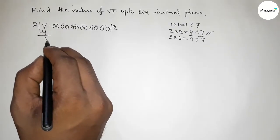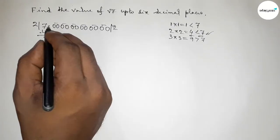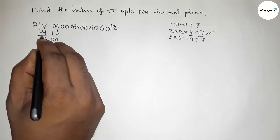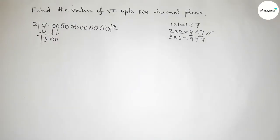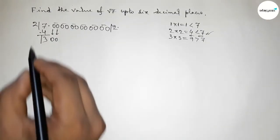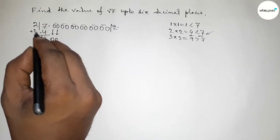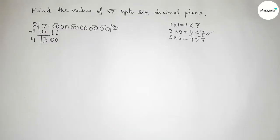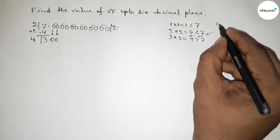So taking 2 here, 2 times 2 equals 4. Now subtracting: from 7 this gives 3. Now this decimal point goes here. Write down the first pair of zeros and draw a division line. Now an important step: here the number is 2, so we have to add by the same number 2. So 2 plus 2 equals 4. Now we have to choose a number beside 4 and multiply by that number which is less than and almost near 300.